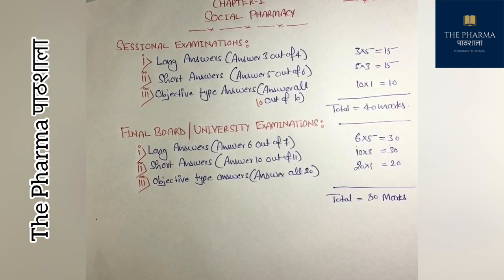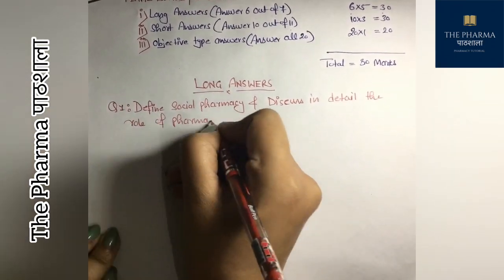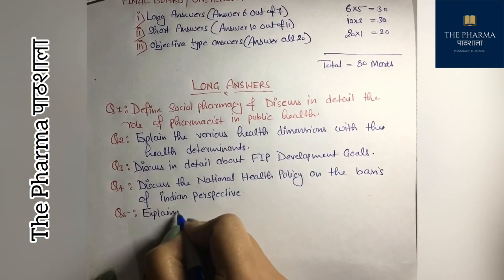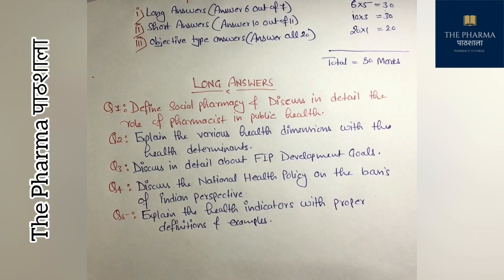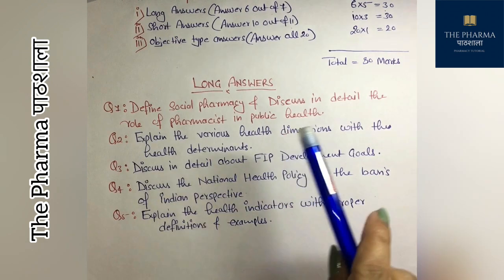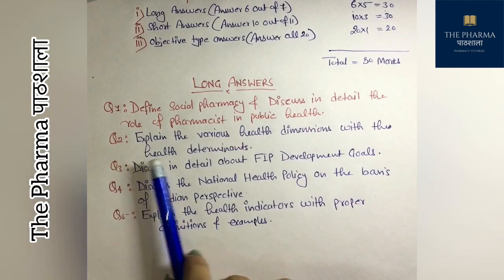With 20 marks from sessionals and 80 marks from finals, the total comes to 100 marks. So today, chapter 1 — this is beneficial for your final board exam. Let's discuss the questions. One important question: define social pharmacy and discuss in detail the role of the pharmacist.